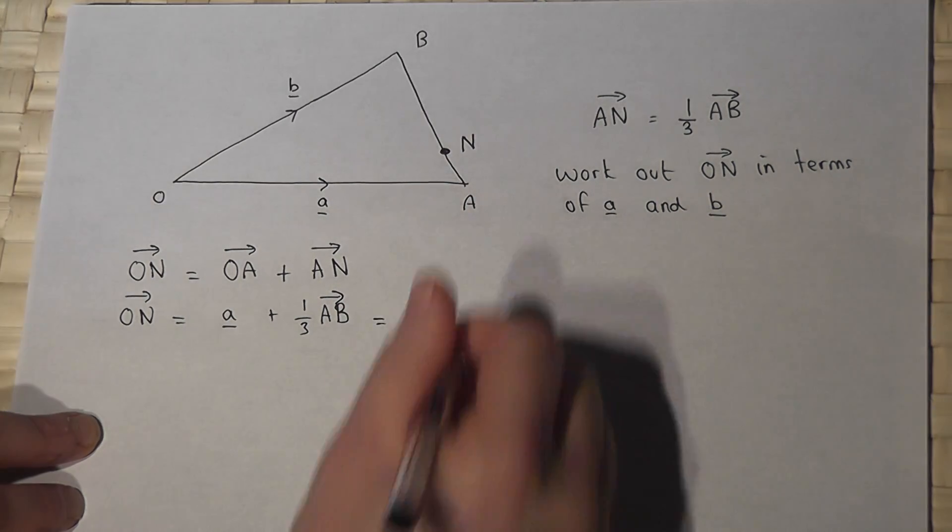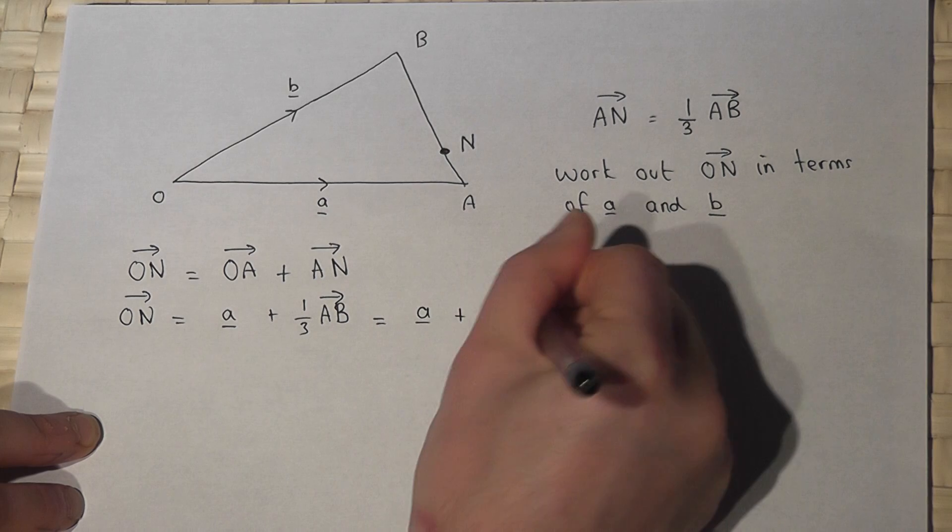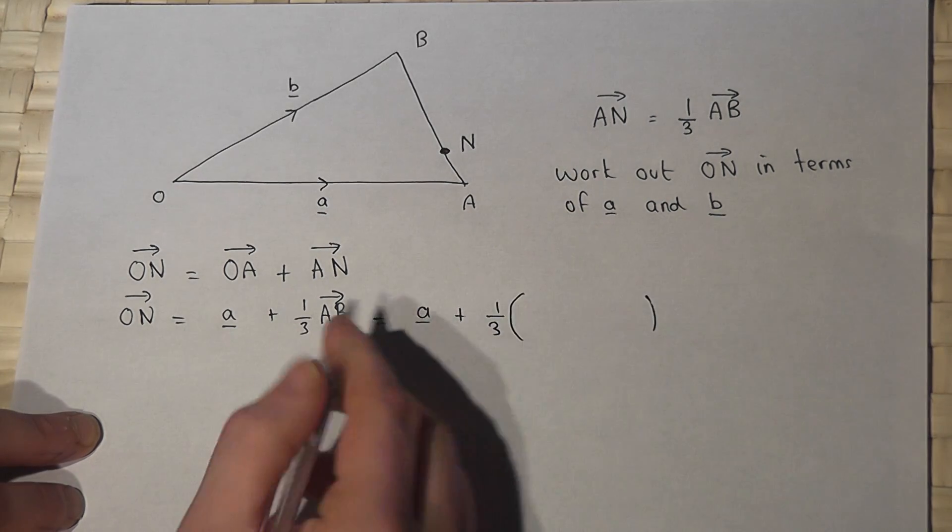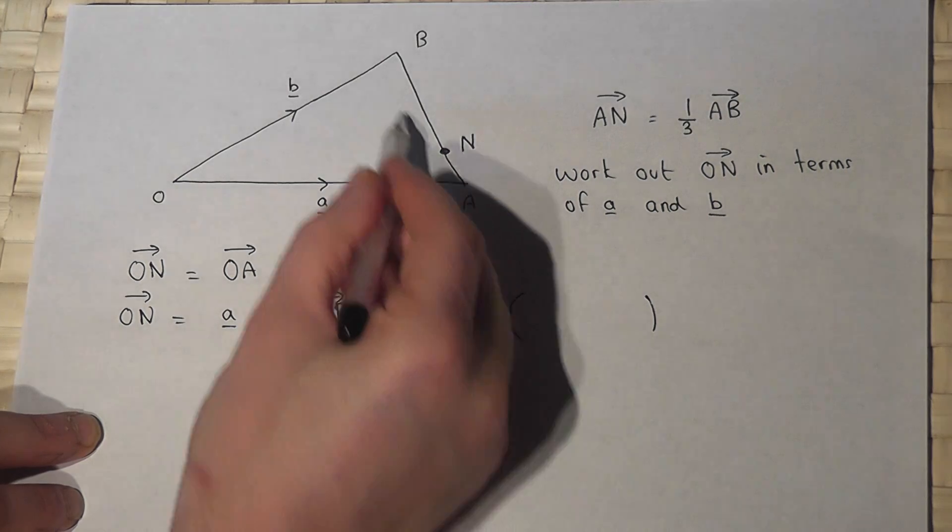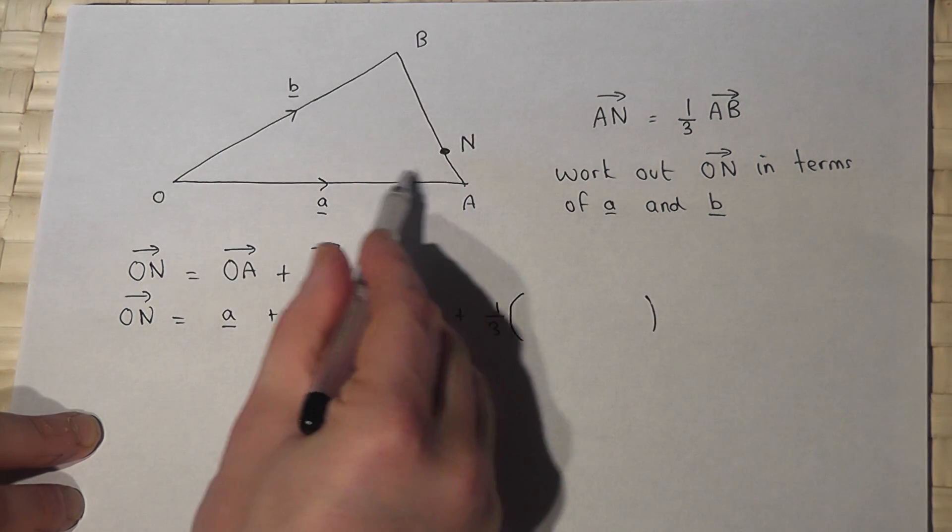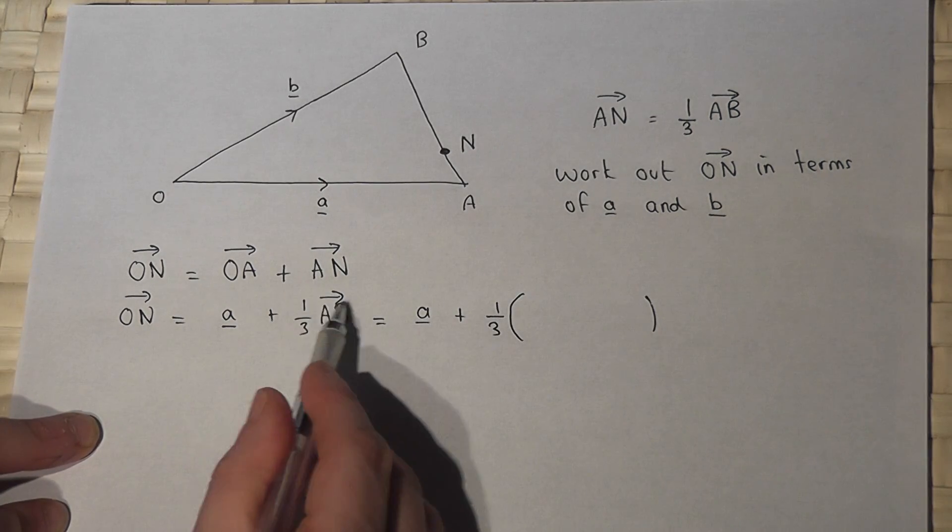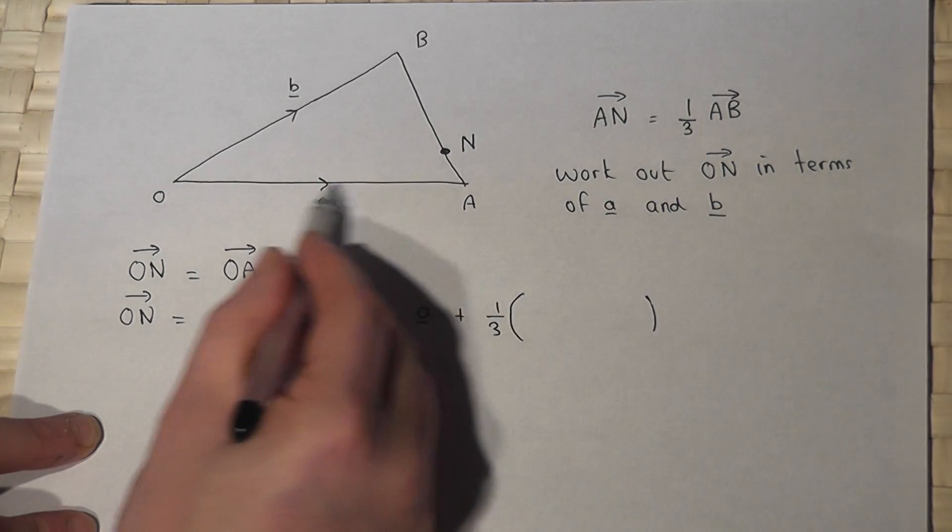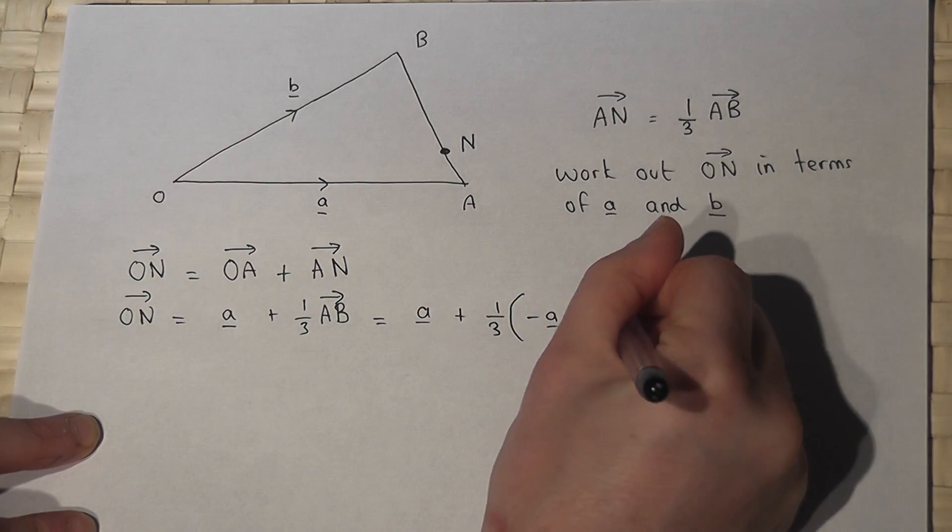OK, so let's go further. So A plus a third, put a bracket here. Now to get from A to B, I can go there, or I can go back along A and up along B. So the vector A to B can be written as negative A plus vector B.